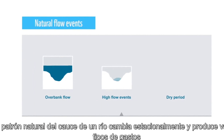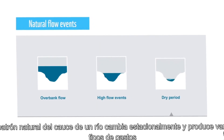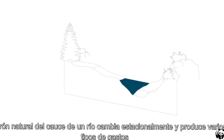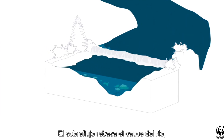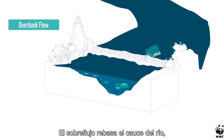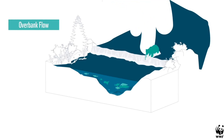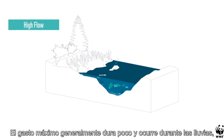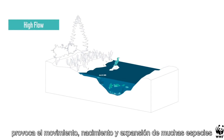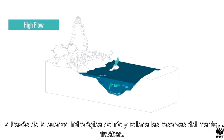A river's natural flow pattern changes seasonally and produces various types of flow events. An overbank flow breaches riverbanks, transports sediment and nutrients, and revitalizes shallow channels. A high flow is usually short in duration and can occur during a rainstorm. It can trigger the movement, birth and expansion of many species throughout the watershed and replenish reservoirs and groundwater.